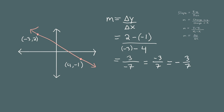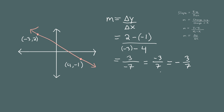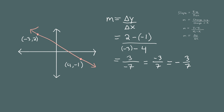You can write this slope in several ways: 3 over -7, or -3 over 7, or simply negative 3 sevenths. Writing it as 3 over -7 means if you pick a point on the line and go up 3 units, you need to go left 7 to reach another point. Writing it as -3 over 7 means if you go down 3, you go right 7 to reach another point. Both say the same thing — it just depends on which direction you travel.